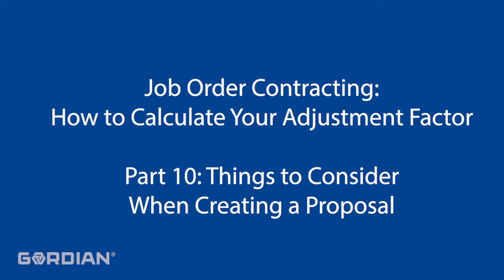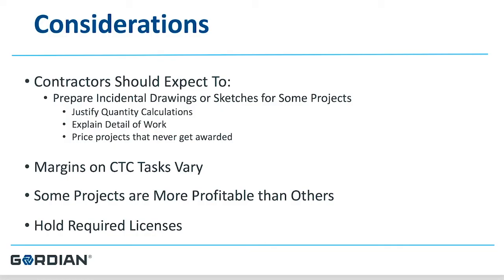Contractors can expect during the life of the contract that they may prepare incidental drawings or sketches to be submitted along with each proposal — think about that expense as you calculate your factor. During the proposal review process, sitting down with the owner to discuss an individual proposal, you may have to justify quantities, explain your math, and explain why you've used certain line items. Remember you are building a long-term relationship with your owner. You are showing the owner exactly which carpet you've put in the proposal and what the quantity is. Bear in mind that the margins on some items in the price book will be to your advantage and some to the owner's advantage.